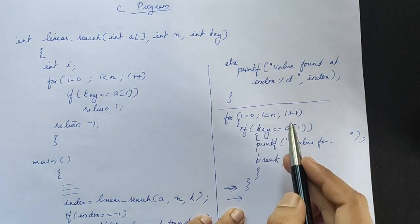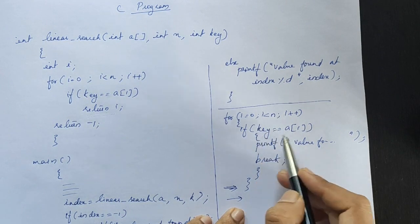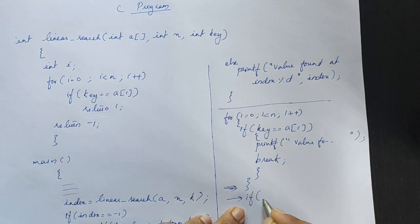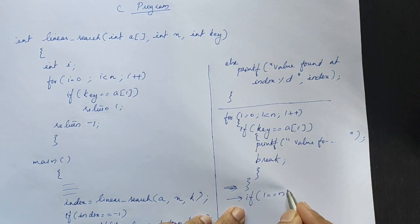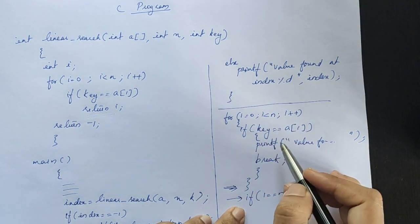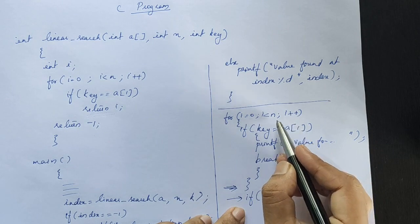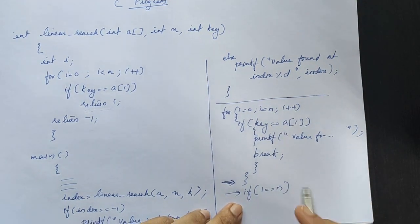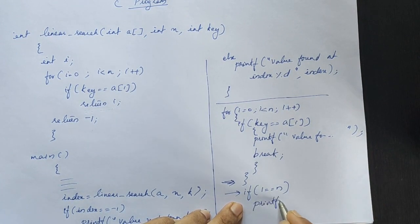Complete and execute until n minus 1 is executed. Check: if i is equal to n, and i is equal to n, then value not found.